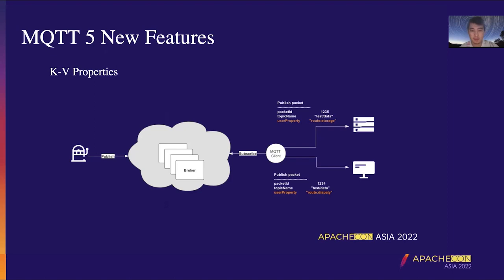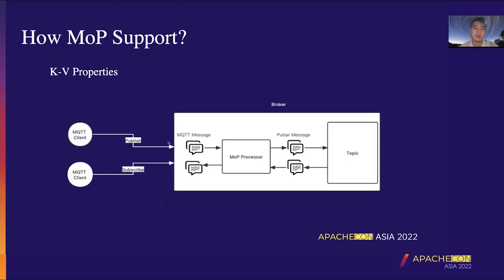Or in other use cases, we need to set different message formats for each message. Some devices send content in JSON format while others use XML format. We can set the key to format and the value to JSON or XML as a user property. The subscriber can decide how to parse the message according to the format. How does MOP achieve this feature? We can thank the powerful Pulsar, because the Pulsar message itself supports custom properties. Therefore, we can easily pass the properties of MQTT and assign them to the Pulsar message. When the message is received, all properties are parsed from the Pulsar message and then constructed as an MQTT message and sent to the client.